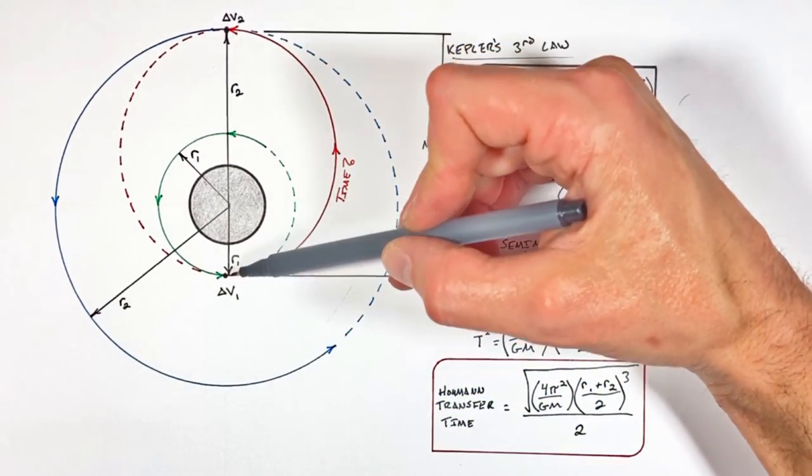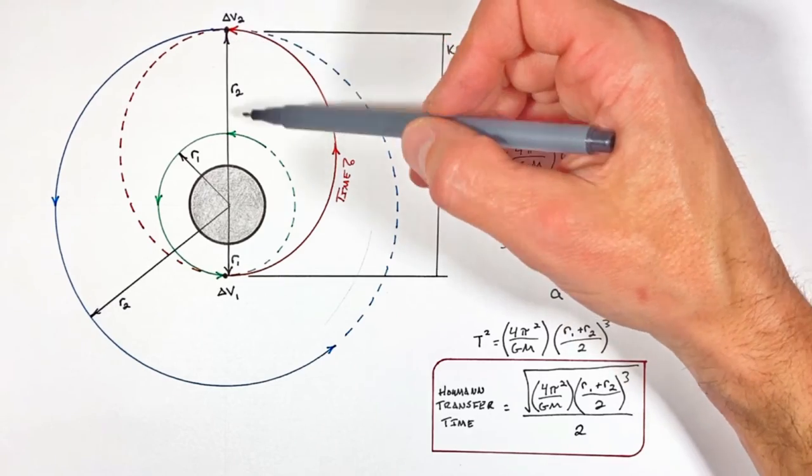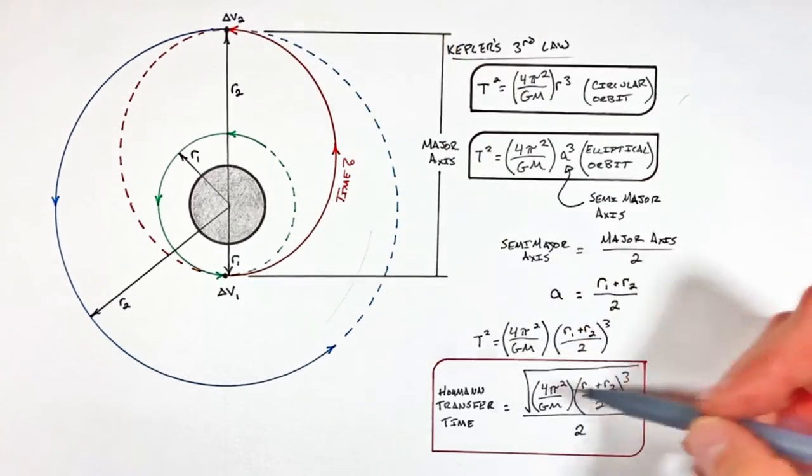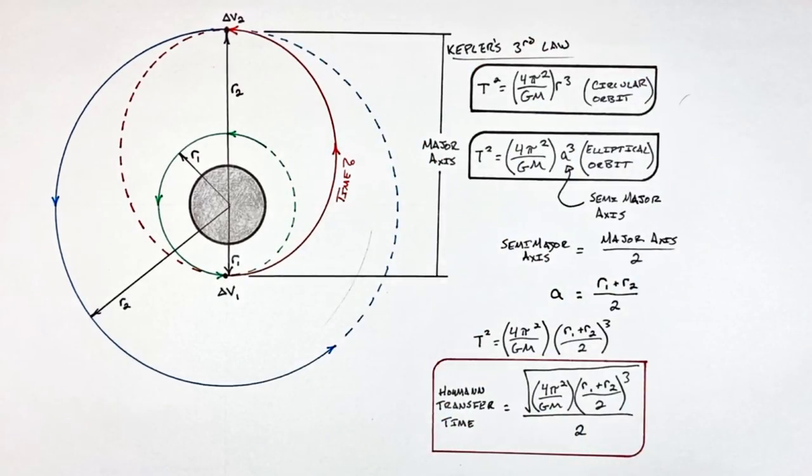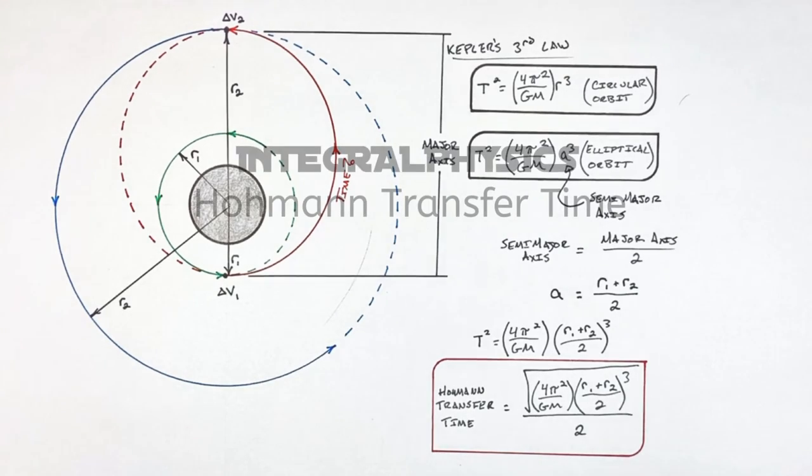So assuming the time to make these two delta V's or two burns occur is relatively small, this equation will tell us the time between one burn and the next. So I hope you've found this useful and on that note that's all for now.